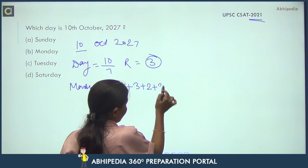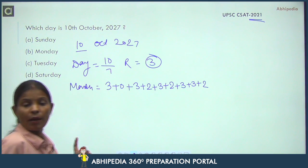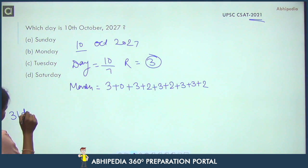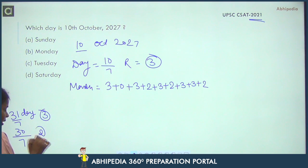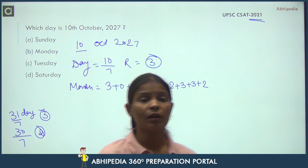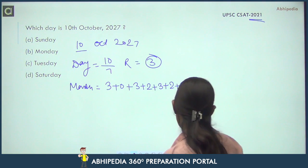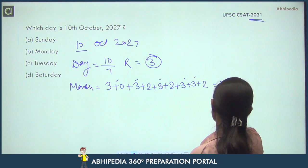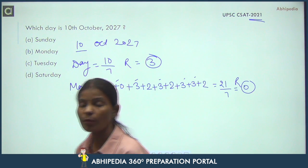Continuing months: March → 3, April → 2, May → 3, June → 2 (30 days), July → 3, August → 3, September → 2. Total month odd days = 3+0+3+2+3+2+3+3+2 = 21. Wait — further calculation gives us total 21, divide by 7: remainder = 0. So odd days from months = 0.